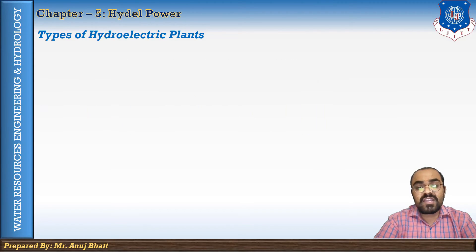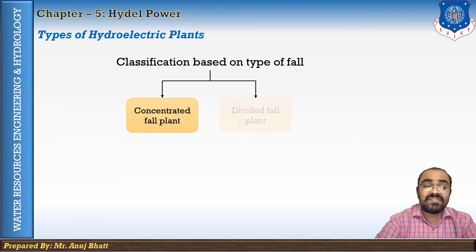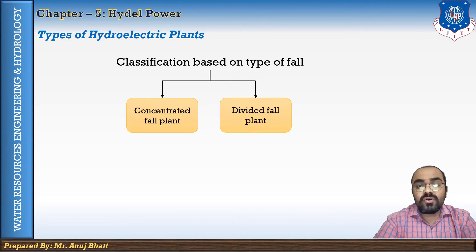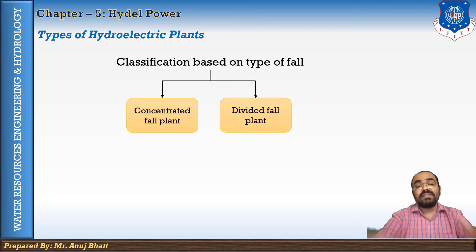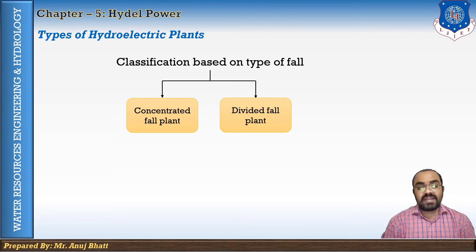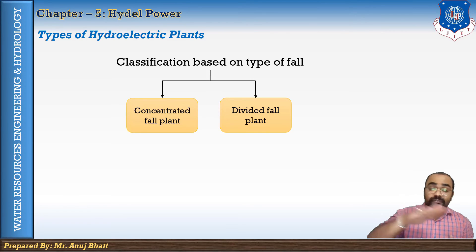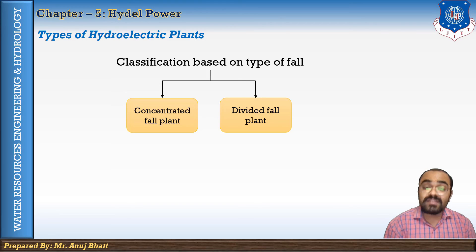The classification based on type of fall includes concentrated fall plants and divided fall plants. In concentrated fall plants, the powerhouse is located close to the dam or weir to utilize the entire created head as a concentrated fall. In divided fall plants, the powerhouse is located at a considerable distance downstream of the dam to utilize the steep fall in the ground surface, increasing the operating head. Divided fall plants are generally more expensive than concentrated head plants.